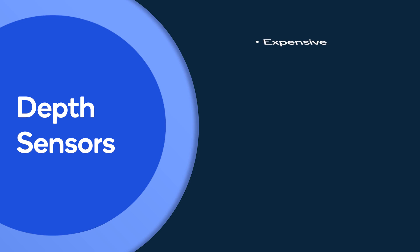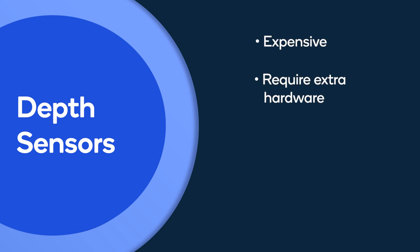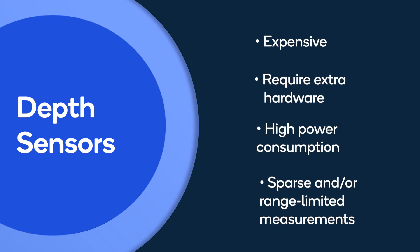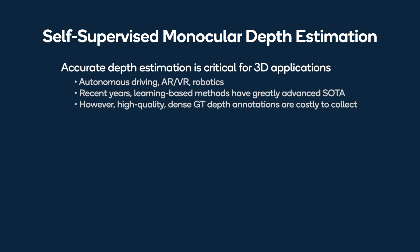However, depth sensors are expensive, require extra hardware, have high power consumption, and can only generate either sparse or range-limited measurements. While depth estimation algorithms can directly infer depth from color images, existing methods still require a large amount of high-quality ground truth annotations and/or stereo data, which are costly to collect and pose considerable limitations.